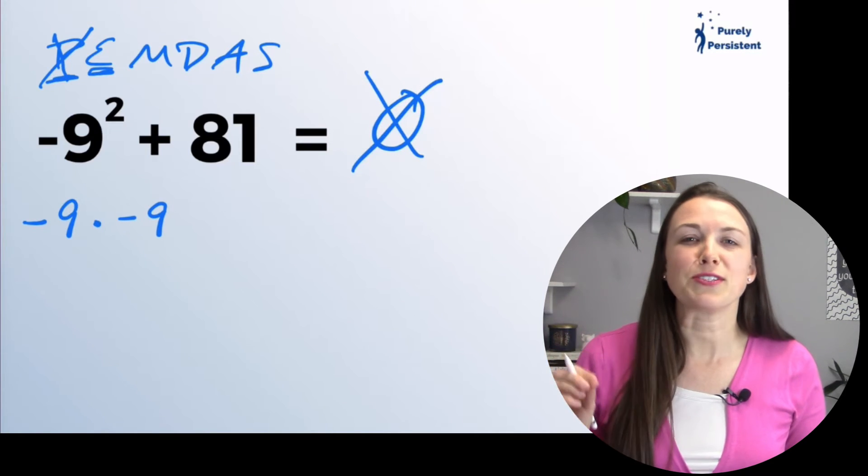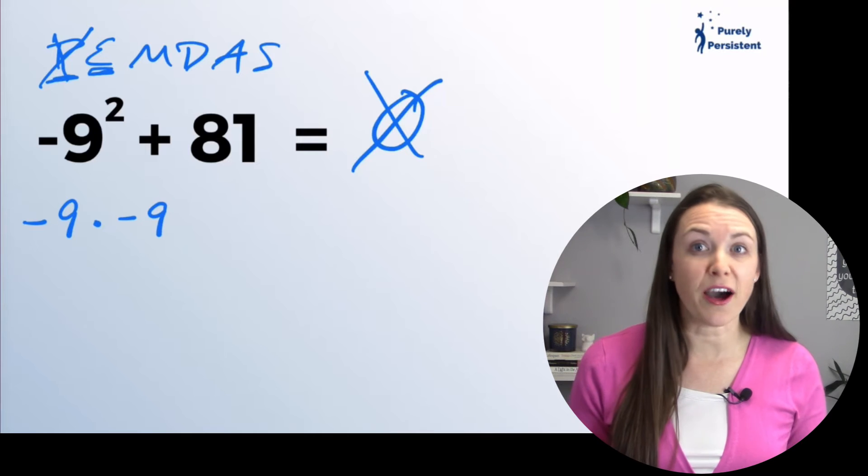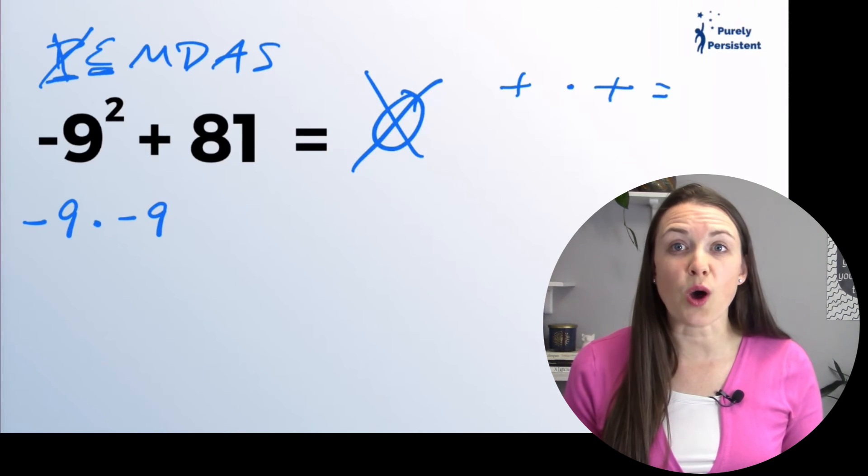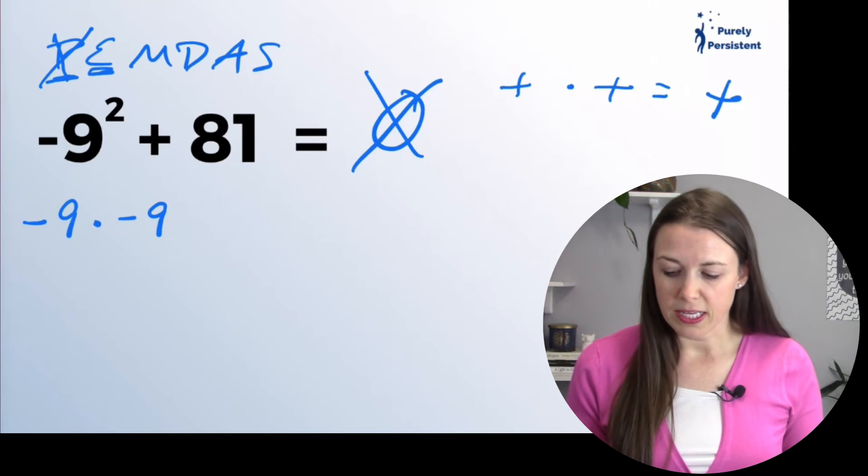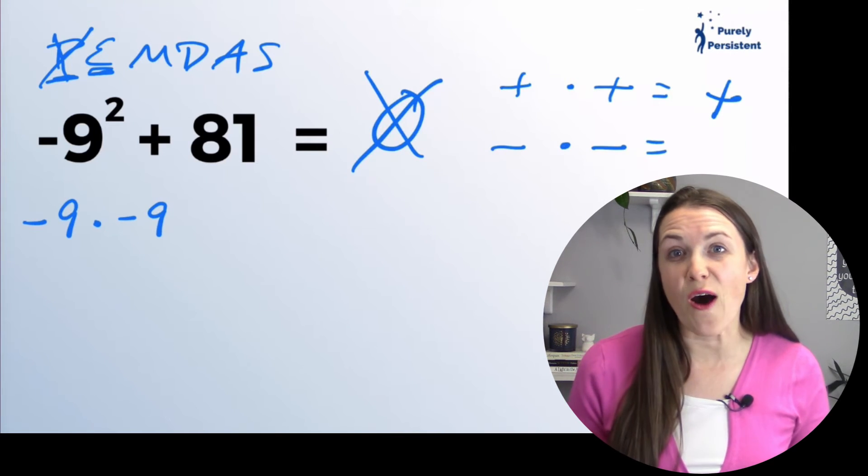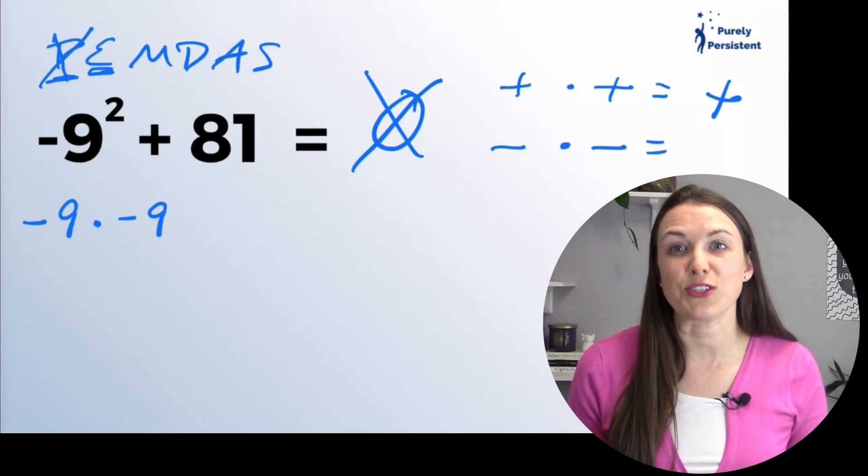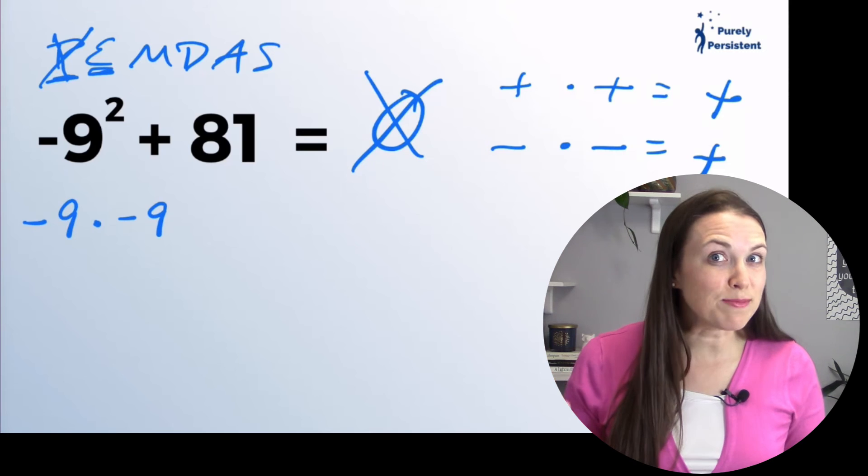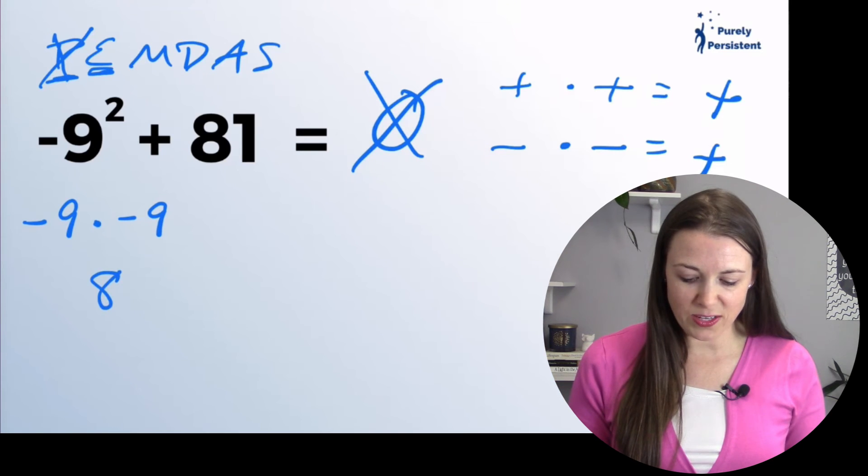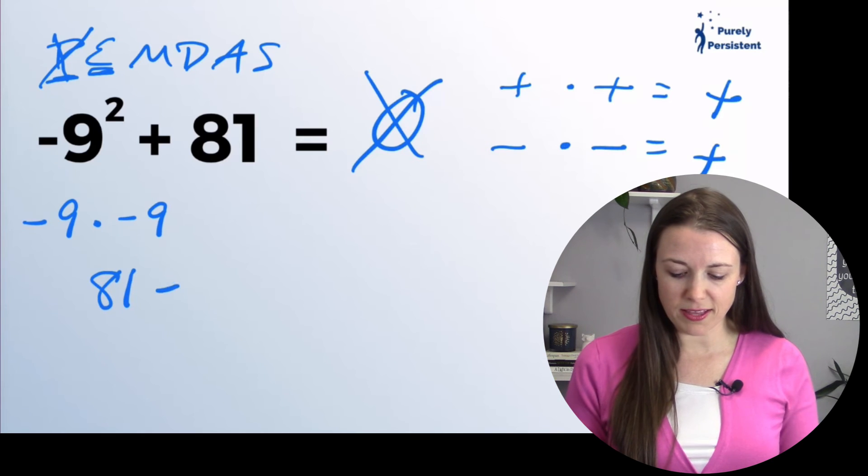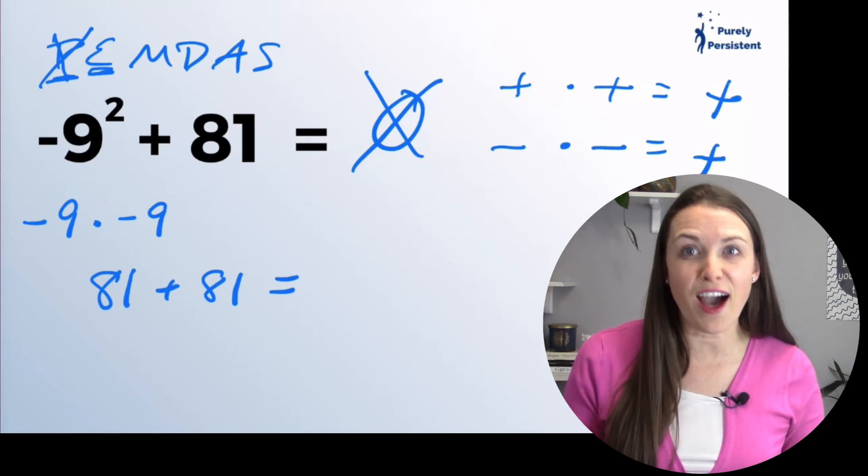What I want you to remember is when you have a positive times a positive, the answer is always positive. If you have a negative times a negative, the answer is also positive. So negative nine times negative nine equals 81, a positive 81. Now we have 81 plus 81, and our answer is not going to be zero.